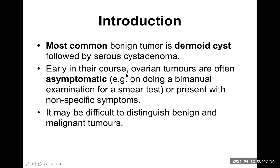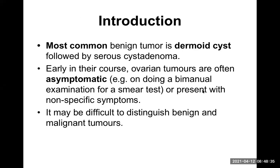Early in their course, ovarian tumors are often asymptomatic — the patient has no pain and no abdominal distension. It may be a silent type of presentation, but later, because of a massive size, she may present with a lump in the abdominal cavity. It may also be accidentally diagnosed during a pap smear examination, when the gynecologist performs a bimanual examination and can palpate any mass inside the abdomen.